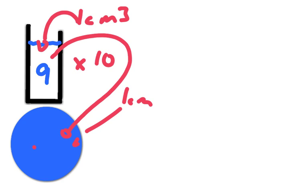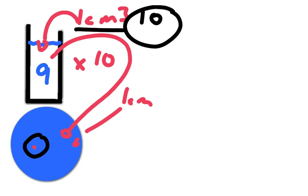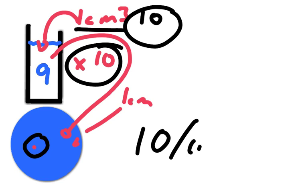That single bacterium divided by binary fission to give you a visible colony. That means there must have been ten bacteria in the original one centimeter cubed — because we diluted nine centimeter cubed and then plated one centimeter cubed. So we've taken the number of colonies and multiplied by the dilution factor of ten, giving us ten bacteria per centimeter cubed of the original inoculum.